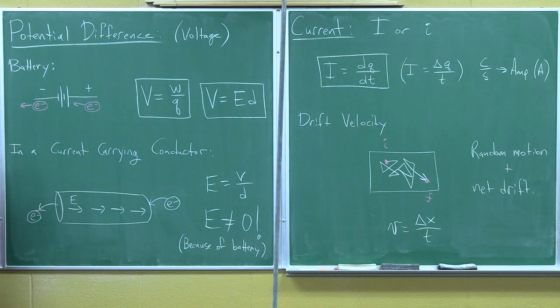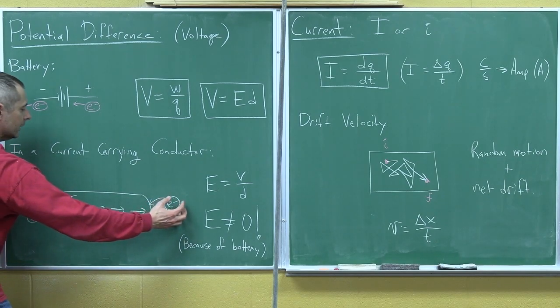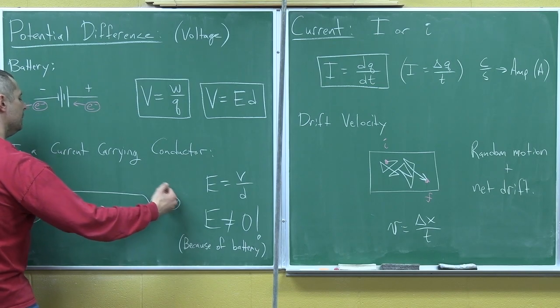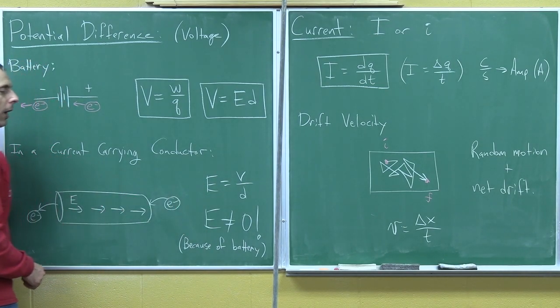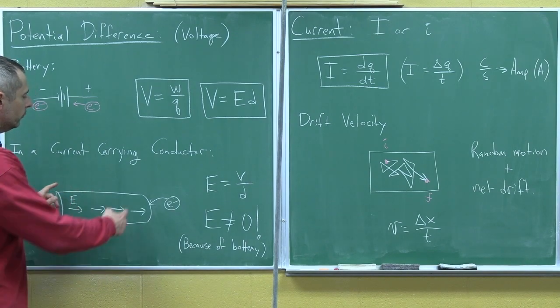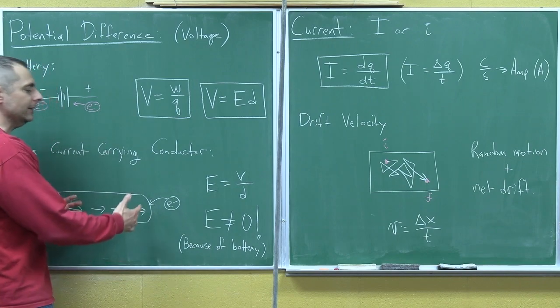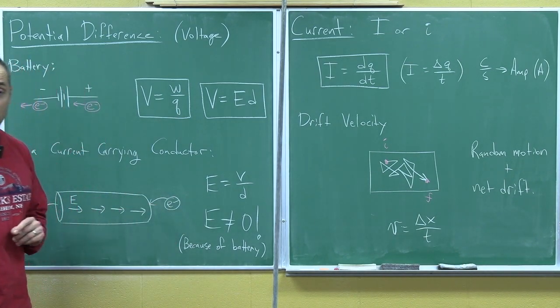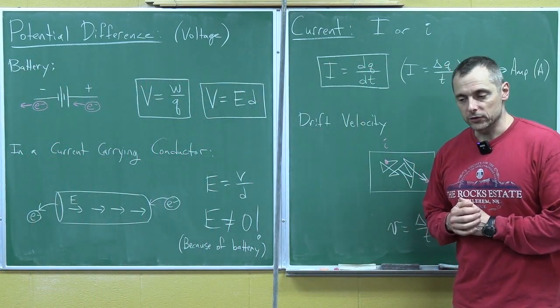So, the battery maintains an electric field within the conductors. So, in a current-carrying conductor, here's a little diagram. The battery maintains the electric field. The electrons go against the electric field. They feel a force this way. So, they're coming in this side and coming out that side. The electric field in the wire, you could find it by measuring the voltage from one end of the wire to the other and dividing by the length of the wire and you will not get zero anymore because of the battery.